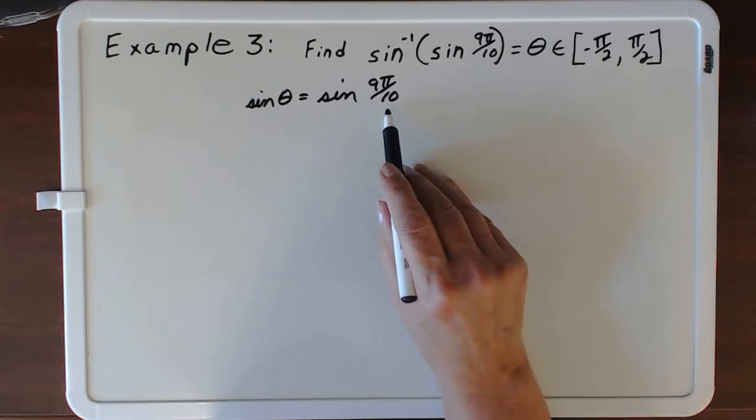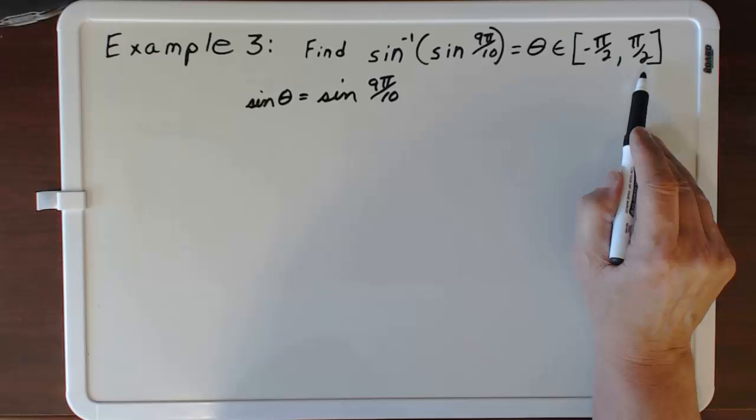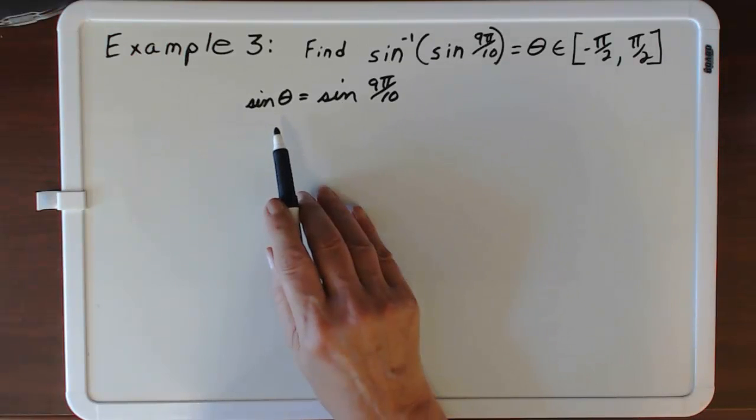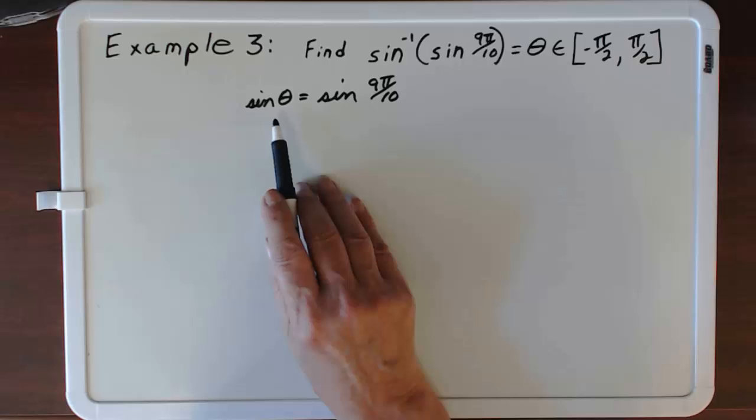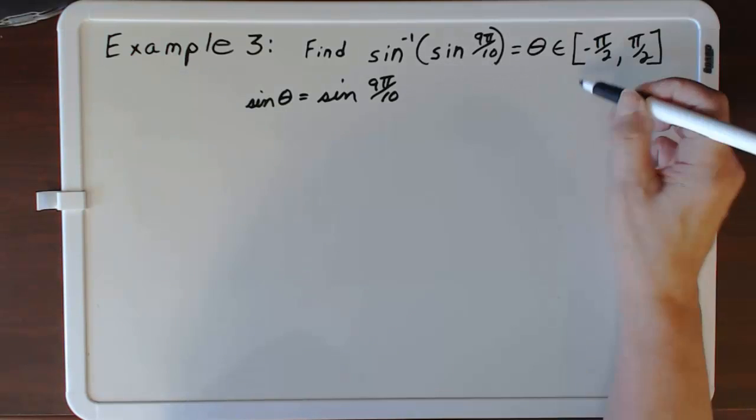Now, since 9π over 10 is not between negative π over 2 and π over 2, we have to find for what theta the sine of this theta is equivalent to the sine of 9π over 10.